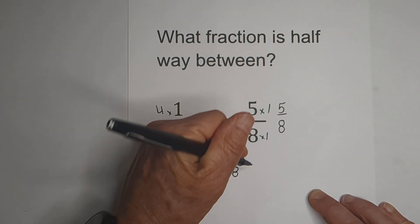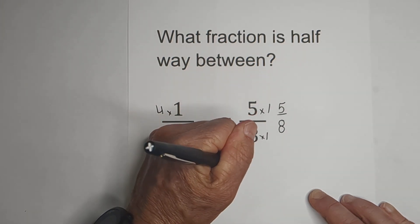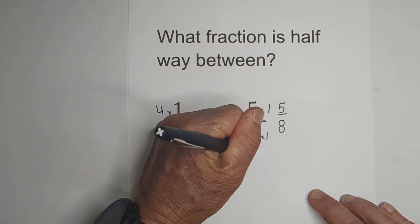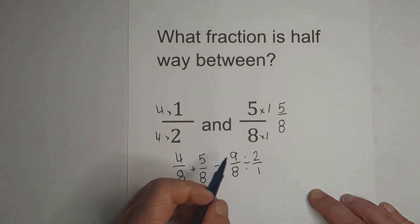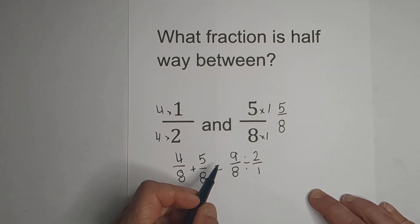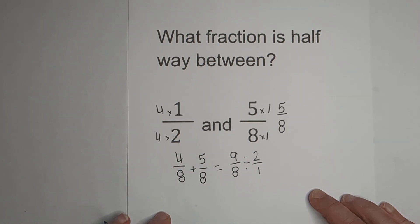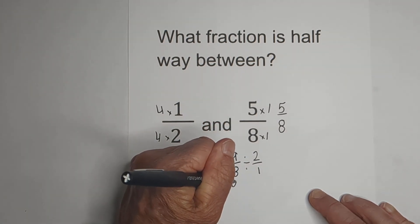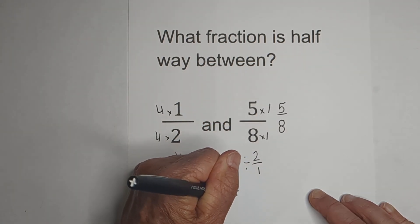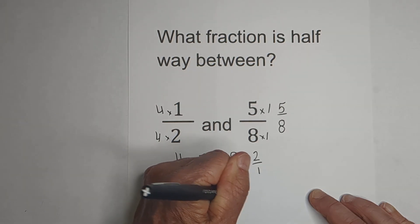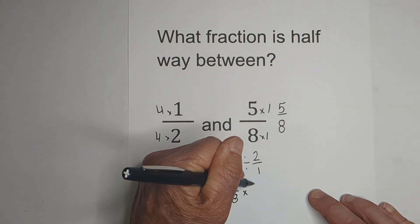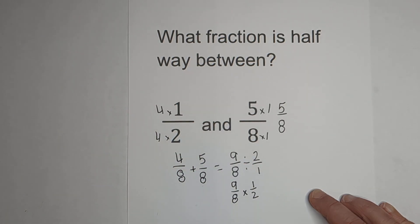Now we need to divide by 2, so we're going to write 2 over 1. When we do this, remember, we can keep-change-flip. So we're going to keep the first fraction, change the division sign, and then flip the last fraction.